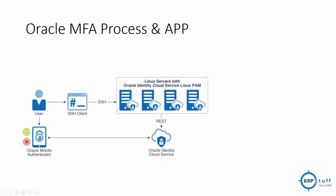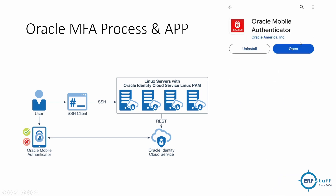First, there is the Oracle Mobile Authenticator app which you download from your app store. In my case I have Android. Once you download it, you need to configure it with your account. When your MFA is not yet configured on your cloud account, it will give you a barcode QR code which you scan in the app on your mobile, and then your app and cloud account will be linked.